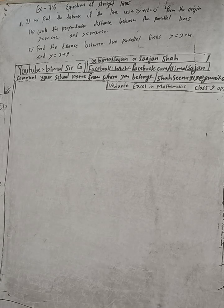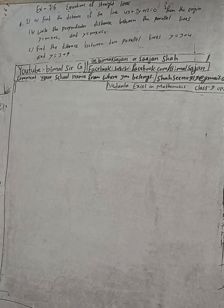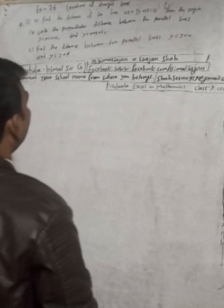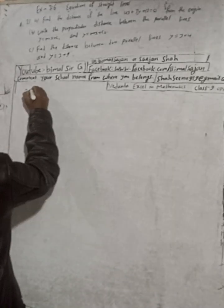Hi class 9 and 10 students, welcome back to the channel. This is question number 2, exercise 7.6, equations of a straight line, class 9 optional mathematics, Vedanta publication. The question is 2a: find the distance of the line 4x plus 3y plus 12 equals 0 from the origin.